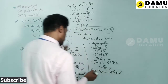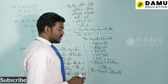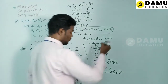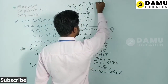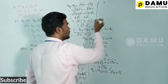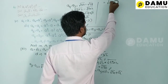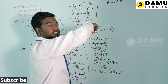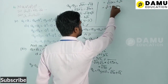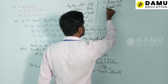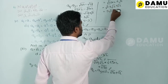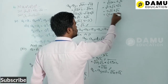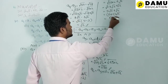Then a6 = a5 + d = √50 + √2 = 5√2 + √2 = (5 + 1)√2 = 6√2. We write 6 as √36, so 6√2 = √(36×2) = √72. So a6 = √72.